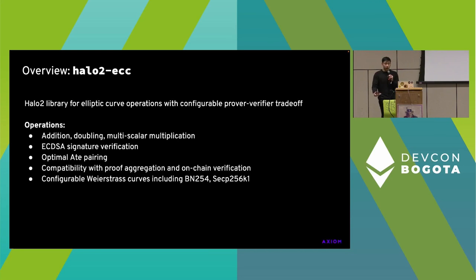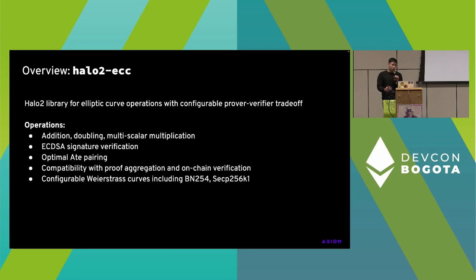First let me tell you what the library can do. It's a Halo 2 library for doing various elliptic curve operations that has a configurable tradeoff between proving time and verifier cost. The operations we support are: for a generic elliptic curve, you put in a few constants, and we can do addition, doubling, multiscalar multiplication, and then for pairing-friendly curves, we can do optimal ate pairing verification, and we can also do ECDSA signature check.